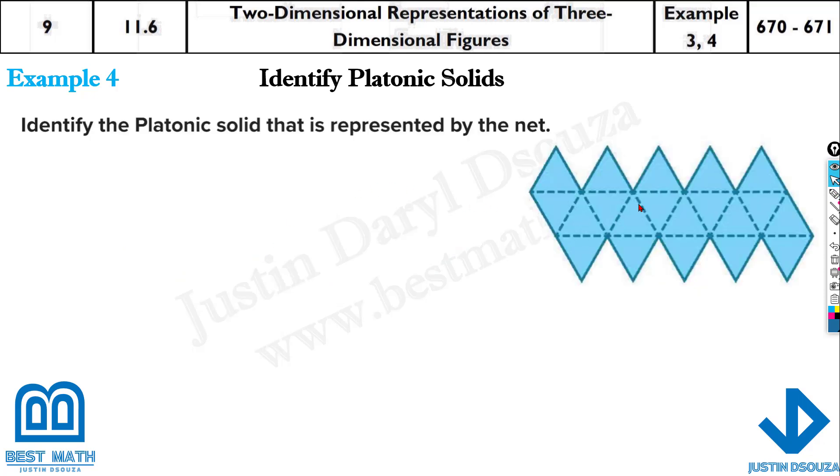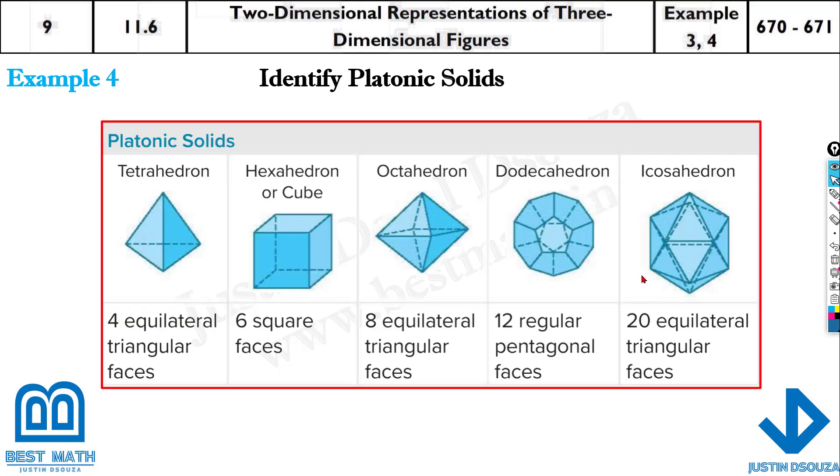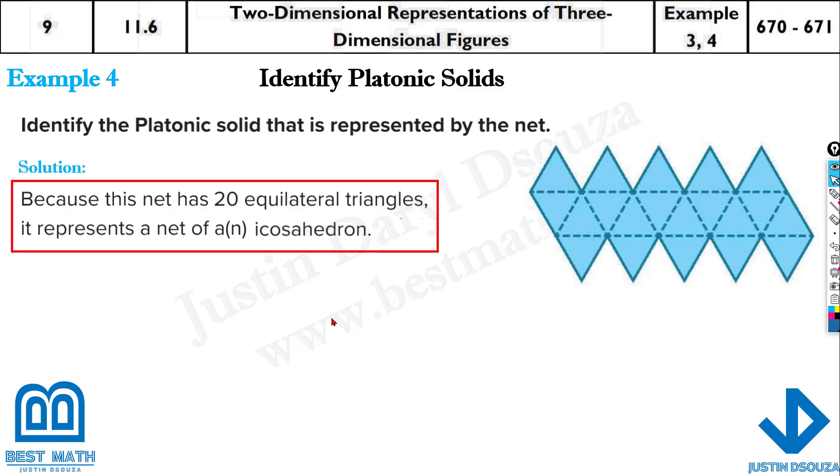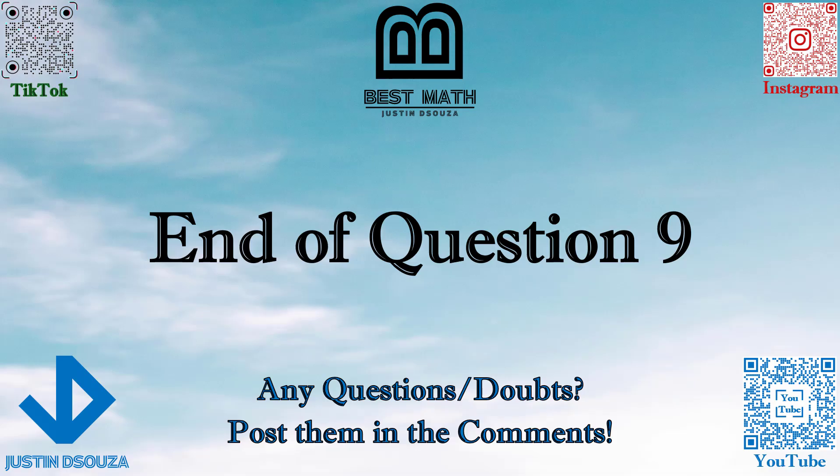In your exam, you just have to select the correct answer, so it'll be very easy. Look at this, identify this platonic solid, count how many equilateral triangles are there? One, two, three, four, eight, four, five are 20. So it's icosahedron, we just now saw 20 equilateral triangles make it icosahedron. That is the end of this question.